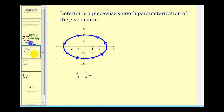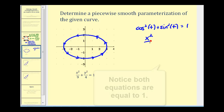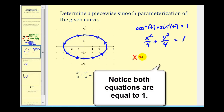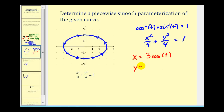For the next example, the given curve is an ellipse given by x squared divided by nine plus y squared divided by four equals one. To parameterize this, we use the trig identity cosine squared t plus sine squared t equals one. If we let x equal three cosine t, this gives us nine cosine squared t divided by nine. And if we let y equal two sine t, this gives us four sine squared t divided by four, which satisfies the equation for this curve.